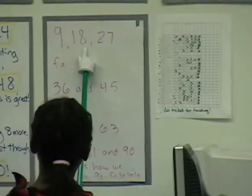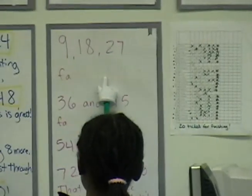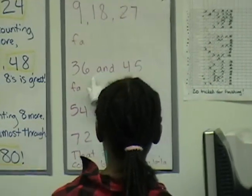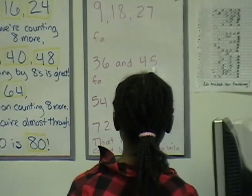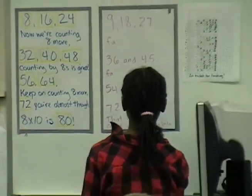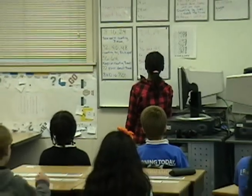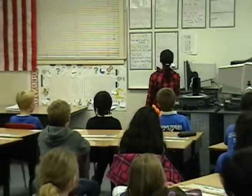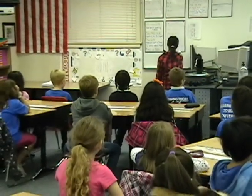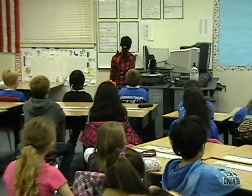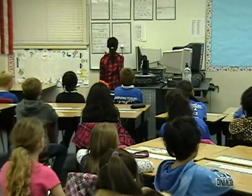9, 18, 27, fa-la-la-la-la-la-la-la. 36 and 45, fa-la-la-la-la-la-la-la. 54 and 63, 72, 81 and 90. That is how we count by nines. Wa-la-la-la-la-la-la-la-la. Cut!